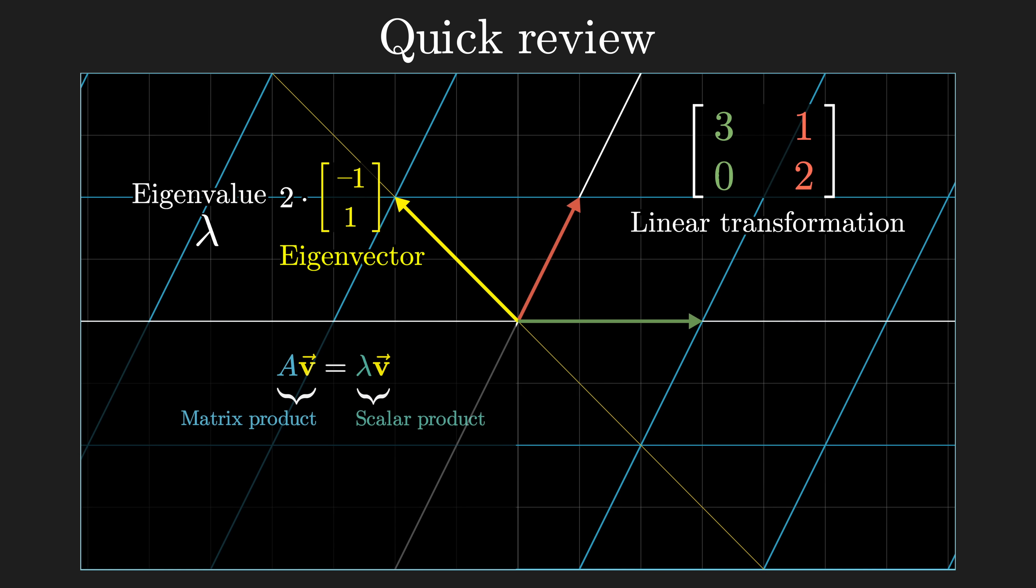When you write this as an equation and rearrange a little bit, what you see is that if the number lambda is an eigenvalue of a matrix A, then the matrix A minus lambda times the identity must send some nonzero vector, namely the corresponding eigenvector, to the zero vector, which in turn means that the determinant of this modified matrix must be zero. Okay that's all a little bit of a mouthful to say, but again I'm assuming that all of this is review for any of you watching.